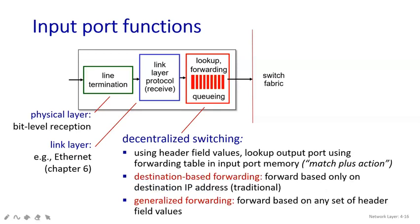There are two more terminologies here. One is destination-based forwarding, which forwards based only on the destination IP address — whenever a packet comes out of the output port, there are three or four channels and it chooses the destination IP address and moves from the router to the destination node through that channel. The other is generalized forwarding, which forwards based on any of the header field values; it uses the forwarding method without taking just the destination address.